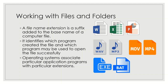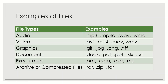Here are examples of common file types. For audio: .mp3, .mp4a, .wav, and .wma. For video: .avi, .mp4, .mov, and .wmv. For graphics: .gif, .jpg, .png, and .tiff. For documents: .docx, .pdf, .ppt, .xlsx, and .txt. For executable applications: .bat, .com, .exe, and .msi. For compressed files: .rar, .zip, and .tar.